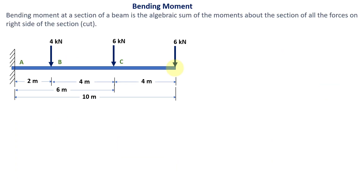Now let us see what bending moment is and how we are going to find out the bending moments for this cantilever beam. Bending moment at a section or cut of a beam is the algebraic sum of the moments about that section of all the forces on the right side of the section. In shear force we considered the resultant force on the right side; here we consider the sum of moments of all forces on the right side.